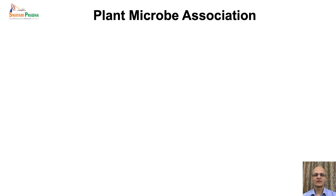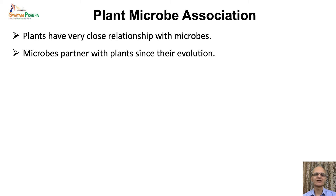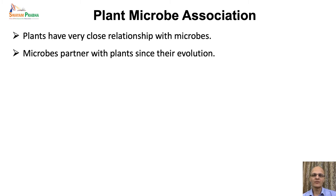First, let's talk about the association of plants and microbes. Plants have a very close relationship with microorganisms. There are a large number of communities of microbes that live in association with plants. In fact, microbes partnered with plants since their evolution — when the evolution of plants started, microbes were already there, and hence plants have evolved with microbes. There is a very long partnership between plants and microbes, and this relationship has evolved over time.